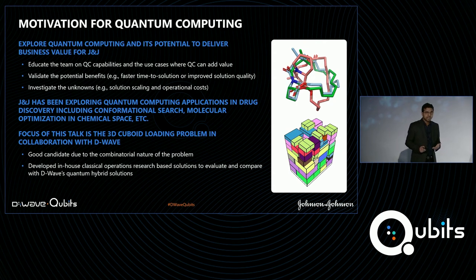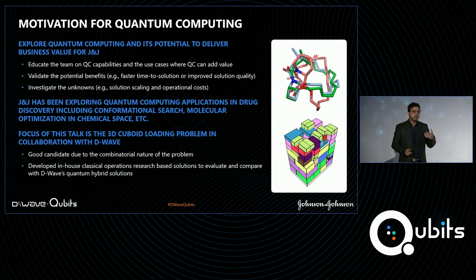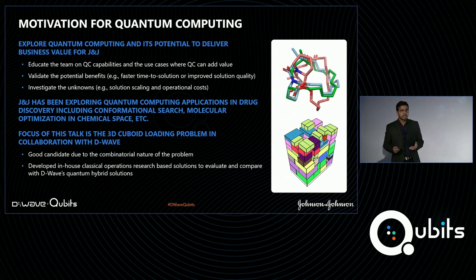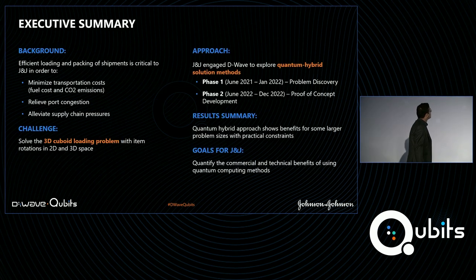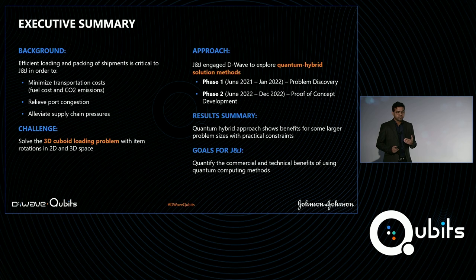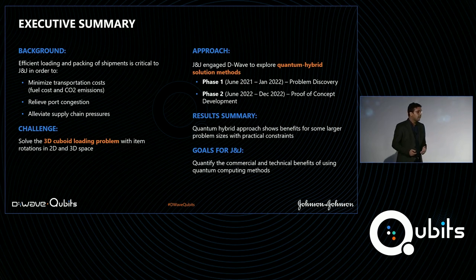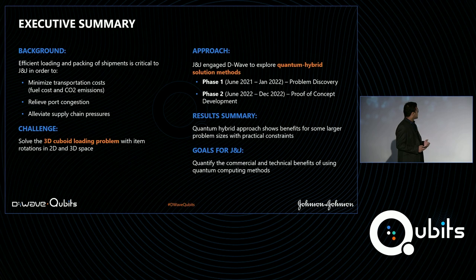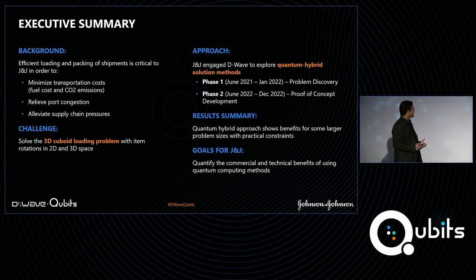There are a couple of reasons why we chose the 3D cuboid loading problem. One is that, owing to its inherent combinatorial nature, it lends itself naturally to the quantum computing paradigm. Secondly, we had already developed in-house classical OR-based algorithms to solve the problem, so it was possible for us to compare our solution methods with the quantum hybrid solutions developed by D-Wave. J&J engaged with D-Wave to explore quantum hybrid methods, with item rotations in 2D and 3D space.